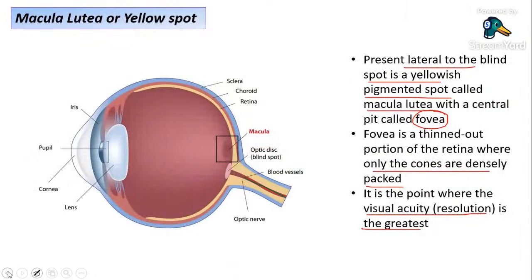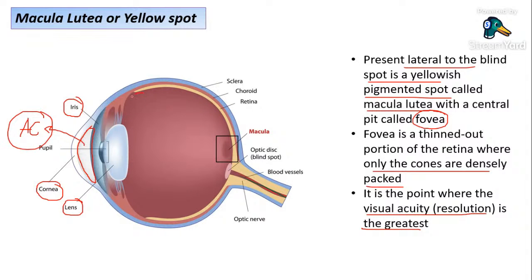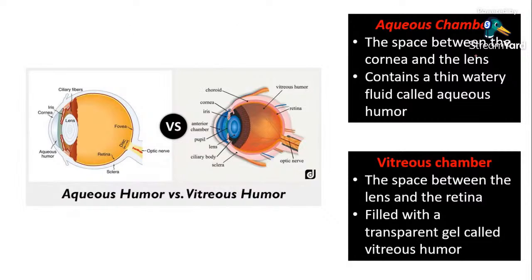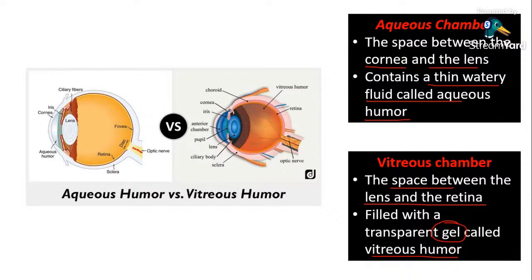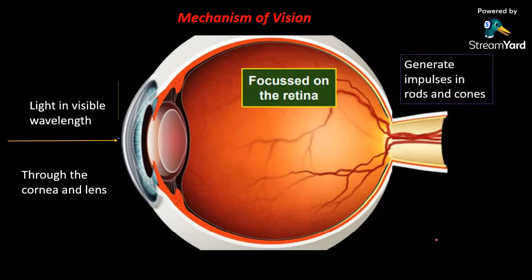Toward the front, there is a fluid-filled space between the cornea and the iris/lens — this is called the aqueous chamber, containing a thin watery fluid called aqueous humor. The space between the lens and the retina is called the vitreous chamber, filled with a transparent gel-like fluid called vitreous humor. Aqueous humor is watery, while vitreous humor is jelly-like.